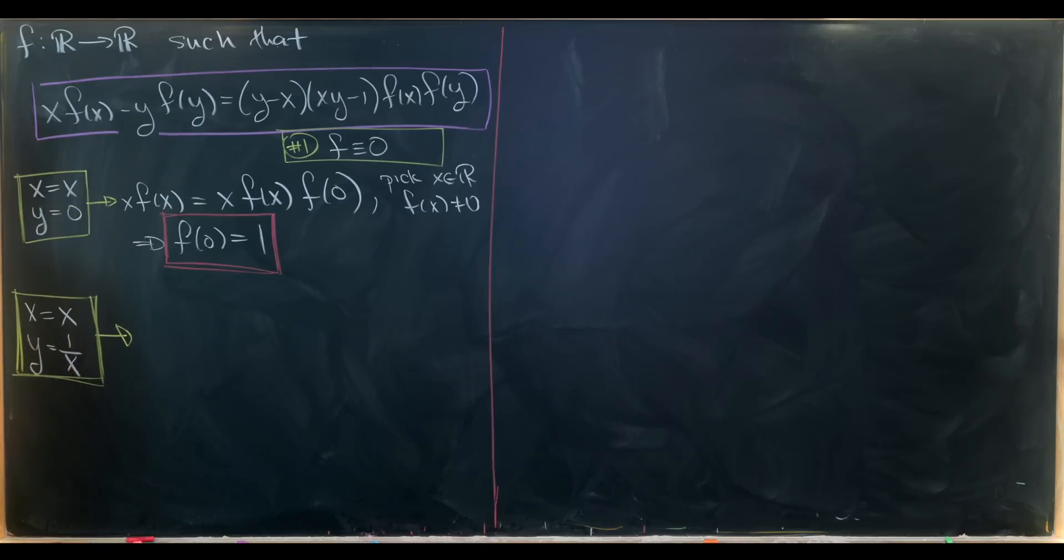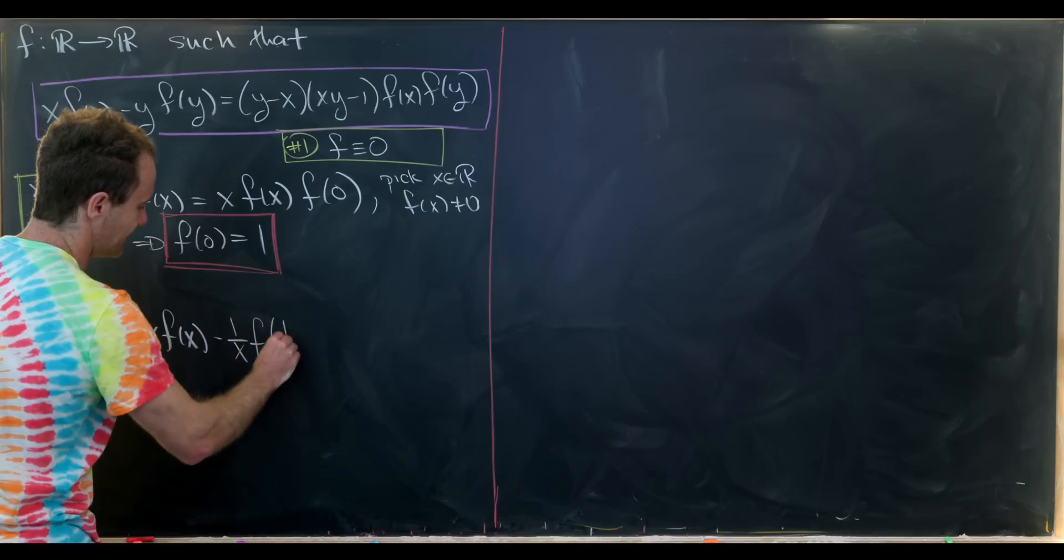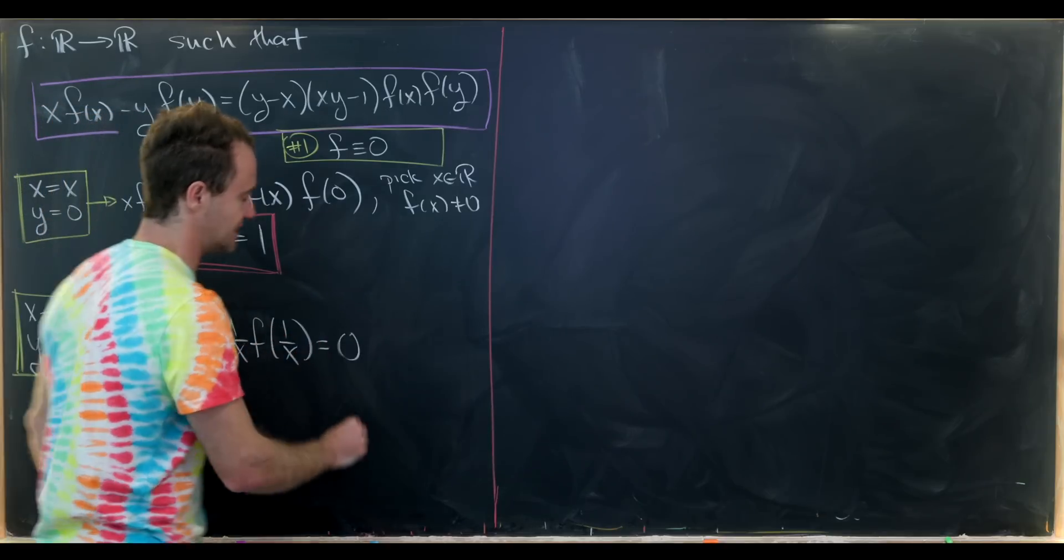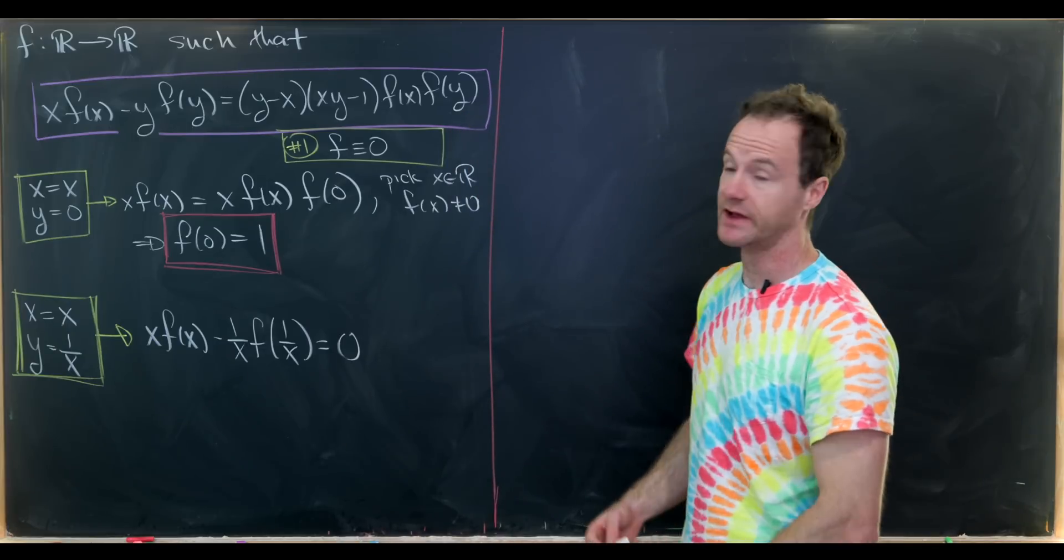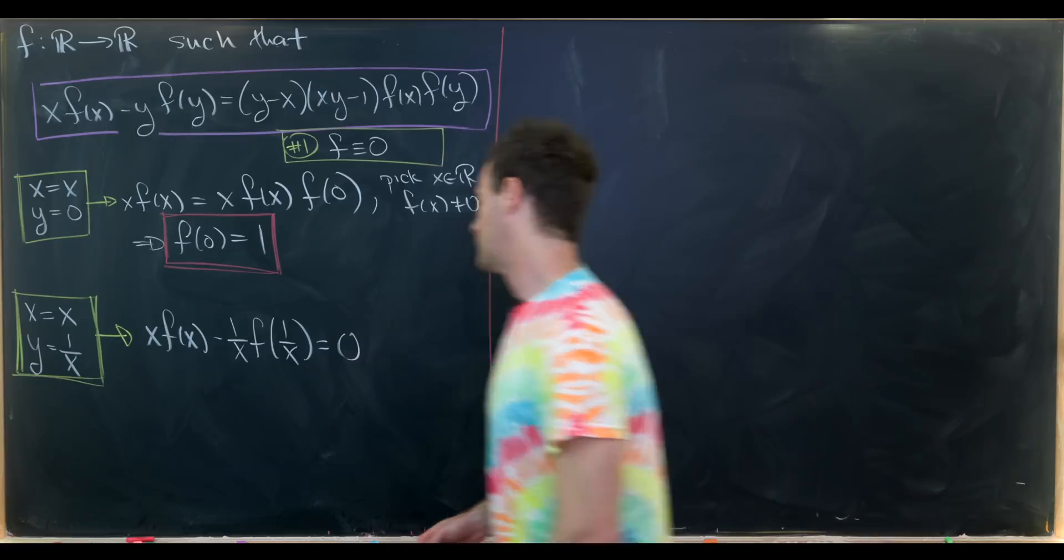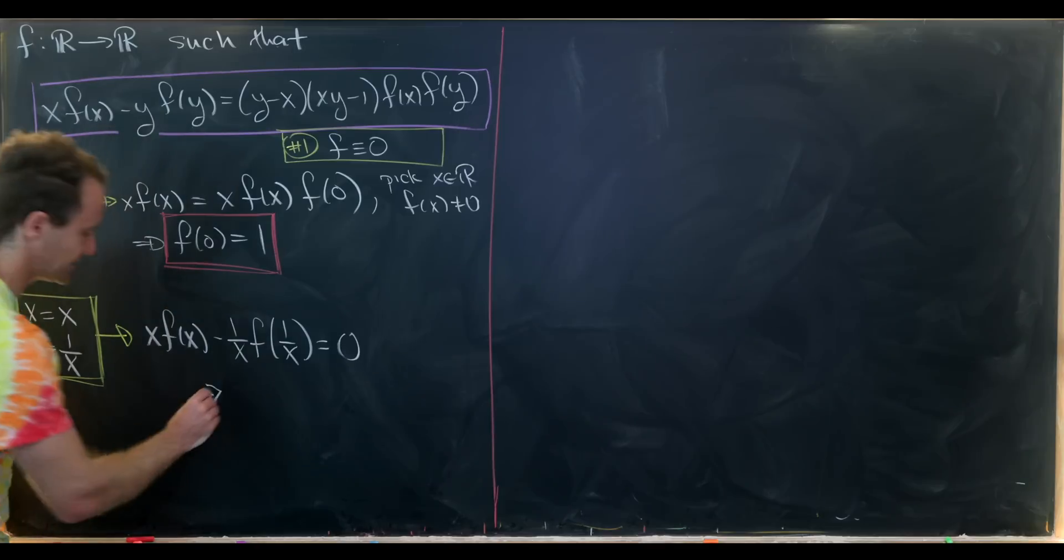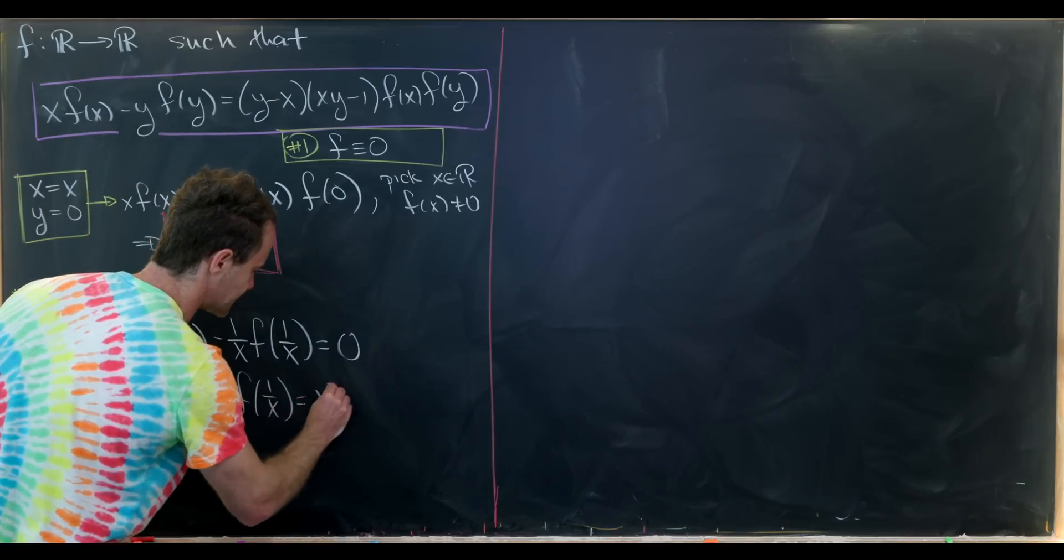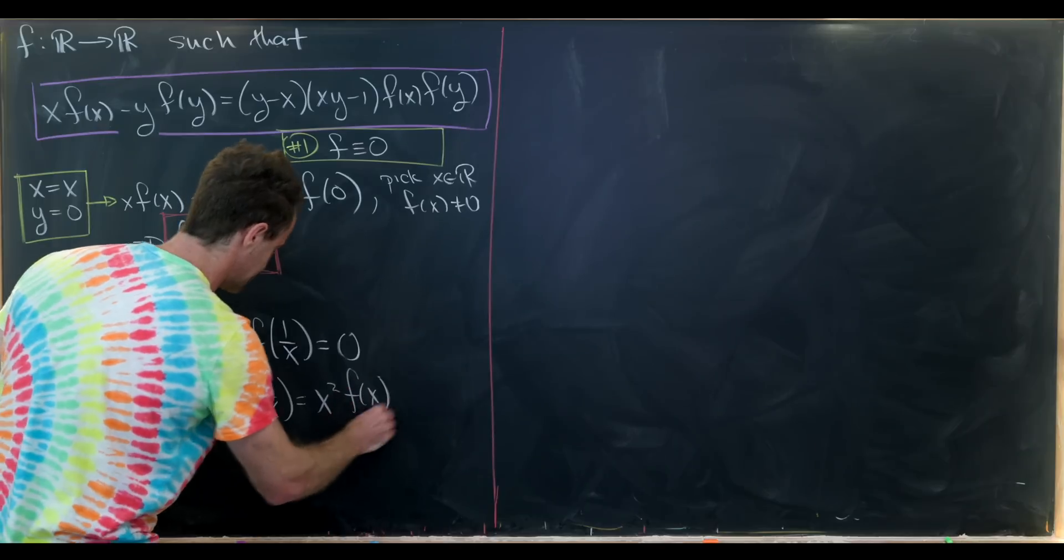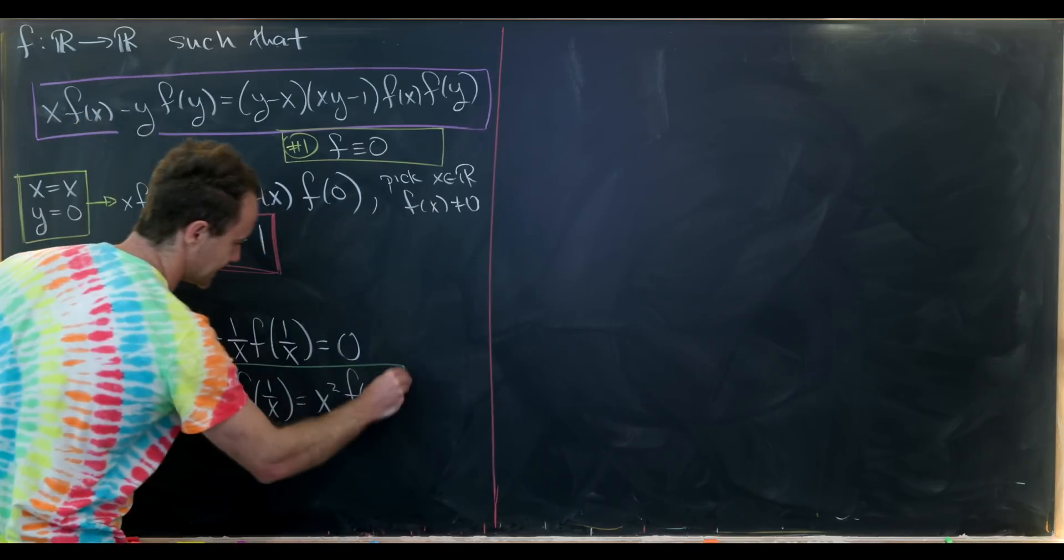That's going to turn into something like this: xf(x-1/x)f(1/x) equals 0, because that whole right hand side collapses. But now we can move some things around here. After moving some things around we'll see that f(1/x) equals x²f(x). And so that's pretty nice I think.